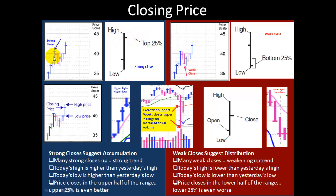Here's an example of a strong close — you have this open to close and it closes right at the top. Here's an example of a weak close. I also like to see it close in the bottom 25%, but really anything below the 50% mark can be interpreted as a sign of weakness. Here's an example on the chart — it closes nearly at the bottom. We should note one exception: when you have downward price movement and it closes in the upper half of the range on increased downside volume, buyers have managed to bring the price all the way back up from the low into a strong close. And even though it was down on that day, it is a sign of accumulation or at the very least support.